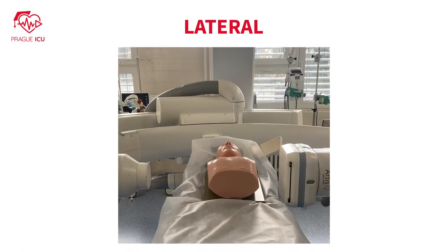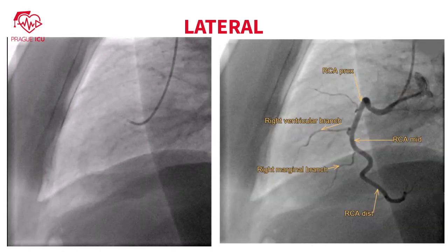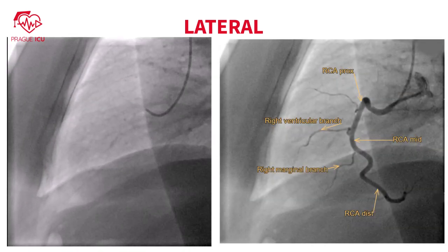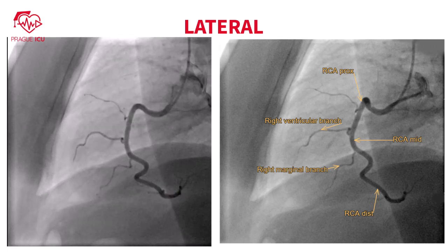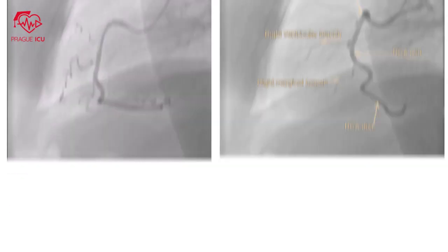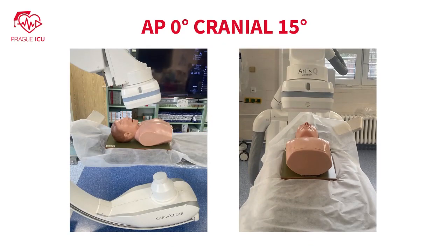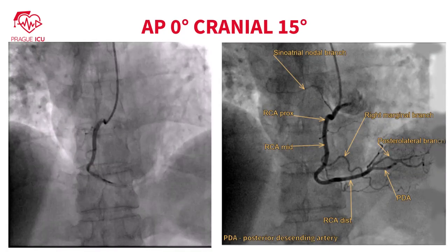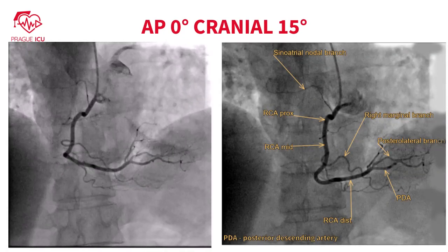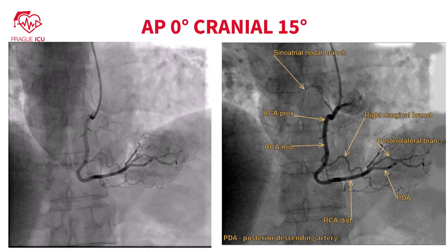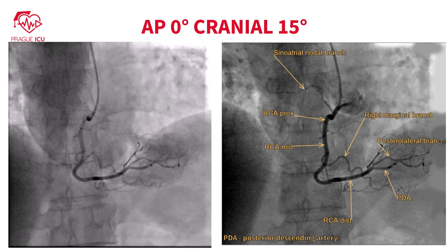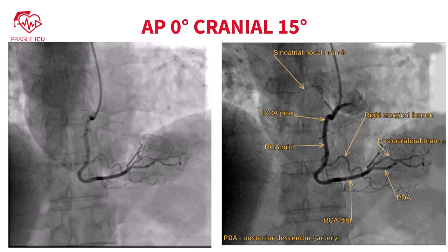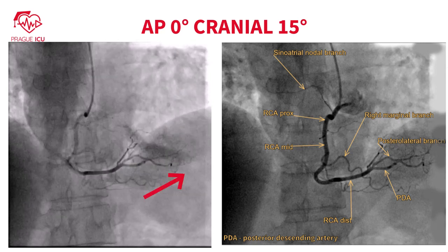Lateral, left anterior oblique 90 degrees view is the perfect view for ostial lesions and the mid parts of the RCA. AP 0 degrees cranial 15 degrees view is best for visualizing the distal RCA bifurcation and the proximal segments of the posterior descending artery and posterolateral branches. PDA directs to the apex.